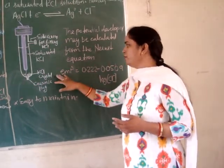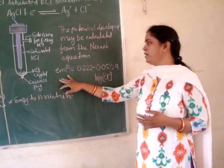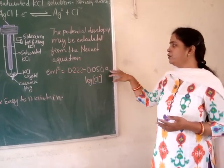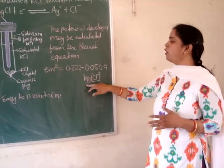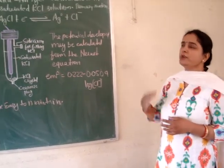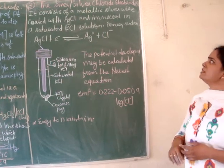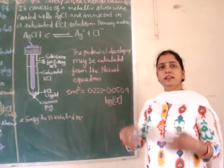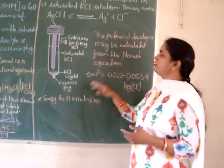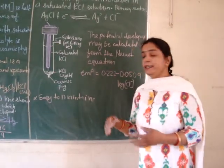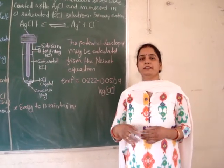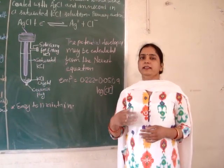The potential developed in this silver-silver chloride electrode may be calculated from the Nernst equation as seen in the previous video. When all values are substituted, we get the final equation: EMF = 0.222 − 0.0592 × log[Cl⁻]. The potential difference generated in the silver-silver chloride electrode is mainly due to the activity of chloride ions. This electrode is very easy to maintain and that is why it is used in many instruments as a reference electrode.